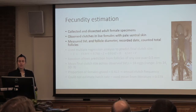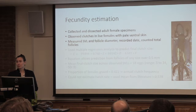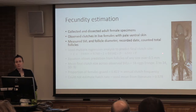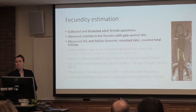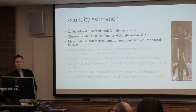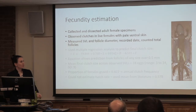For the fecundity estimation, we collected and dissected adult female salamanders. We observed clutches in live females with pale stomach skin. We measured snout-vent length and follicle diameter, recorded the date of capture, and counted total number of follicles. You can see in this individual that follicles are really different sized — some tiny, some good sized, some medium range — and this creates problems when estimating final clutch size. Are these little eggs going to be reabsorbed, or turn into large eggs? It's very hard to say.